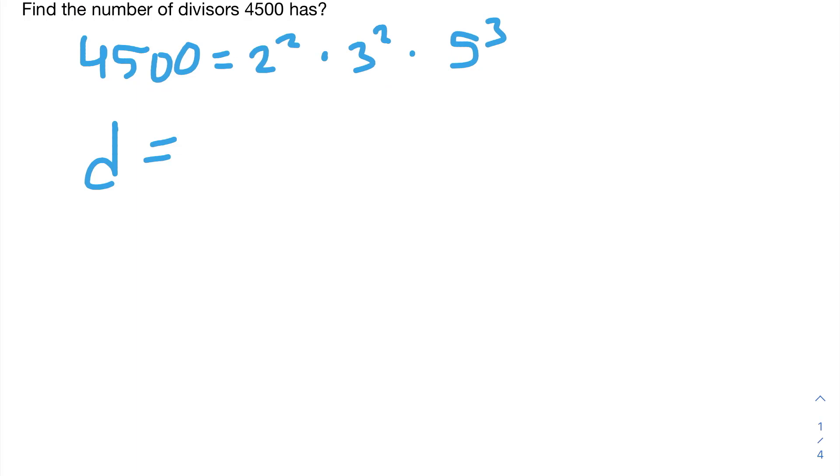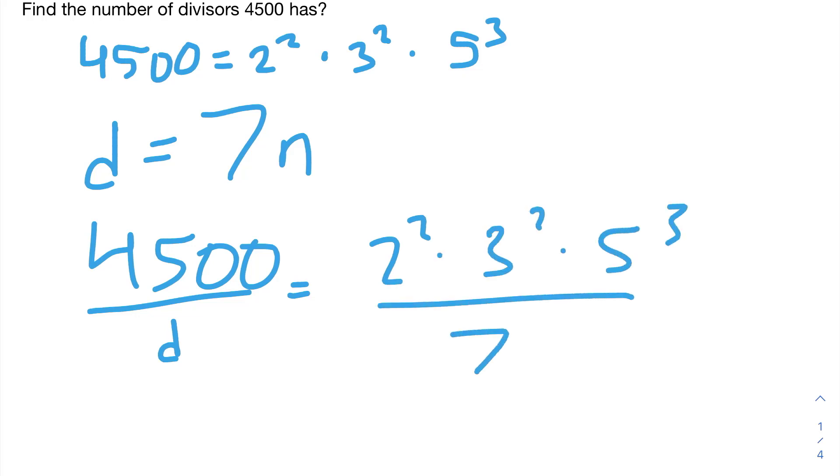Now, what if D is equal to 7n, where n is another integer? Well, in this case, D also cannot be a divisor of 4,500 because there's no way to get rid of that 7 that will be in the denominator. And we can no longer simplify that because there's nothing to cancel at the 7.